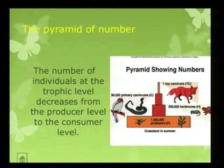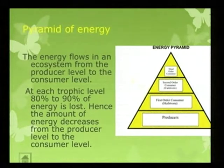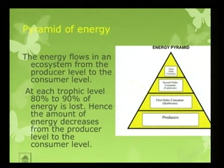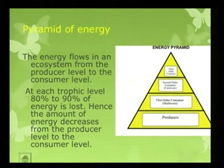This is called the pyramid of number. The number of individuals at the trophic level decreases from the producer level to the consumer level. Pyramid of energy: the energy flows in an ecosystem from the producer level to the consumer level. At each trophic level, 80% to 90% of energy is lost. Hence, the amount of energy decreases from the producer level to the consumer level.